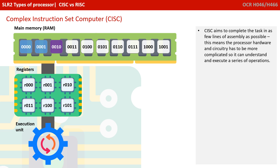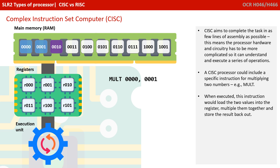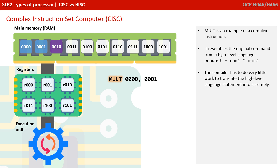Starting with the complex instruction set computer, CISC aims to complete the task in as few lines of assembly as possible. This means the processor hardware and circuitry tends to be more complicated so that it's able to understand and execute a series of operations. A CISC processor could include a specific instruction for multiplying two numbers — we're calling that 'mult' as shown on the screen. When executed, this instruction would load the two values into the register, multiply them together, and store the result back out. Mult is an example of a complex instruction that resembles the original command from the high level language, meaning the compiler has to do very little work to translate it into low level assembly code.